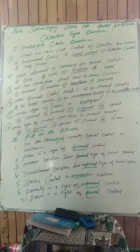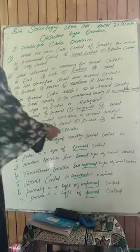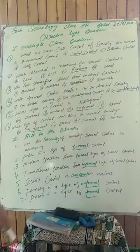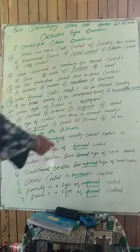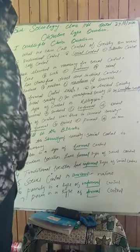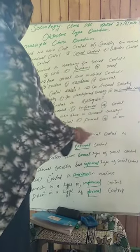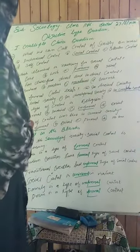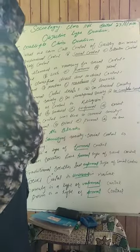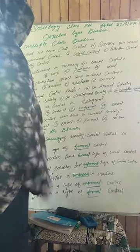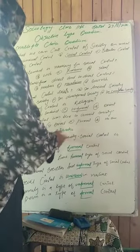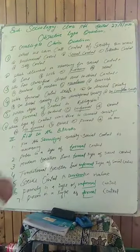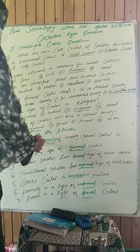Now move towards the next type of questions, which is the fill-in-the-blank type. Number one: for the blank of society, social control is necessary. Society ke kis ke liye social control necessary hota hai? The answer is: for the security of society. Social control society ki security ke liye zaruri hota hai.